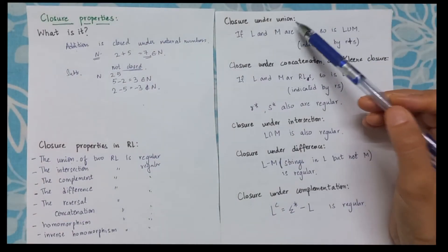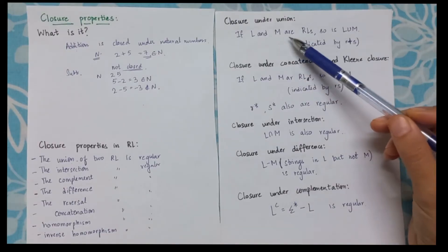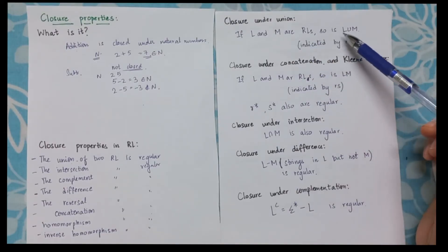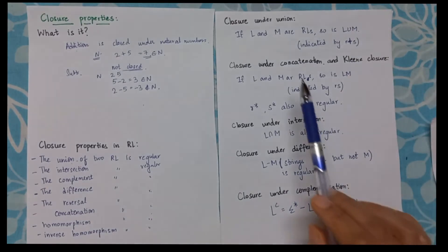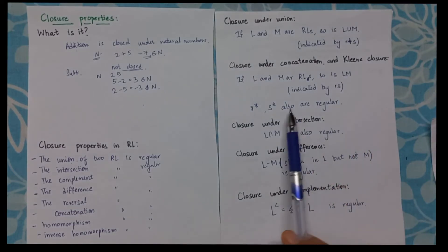So now if I have union operation, this we have seen several times. If L and M are regular languages, we have L union M. That is I write the regular expressions as R plus S. Concatenation and Kleene closure operations are also closed in regular languages.